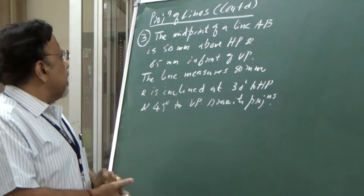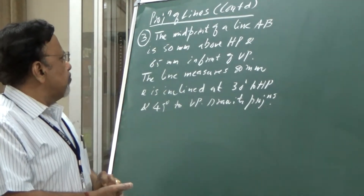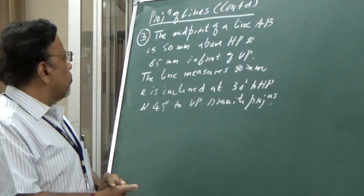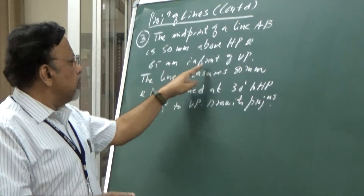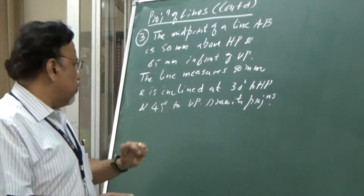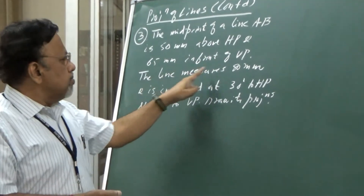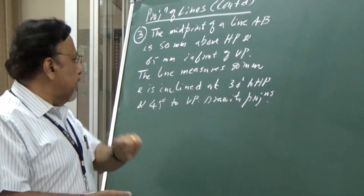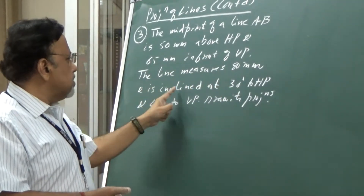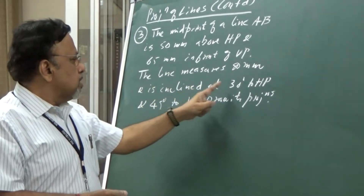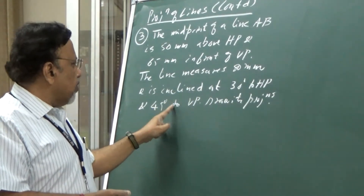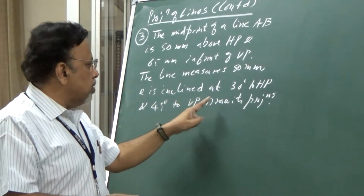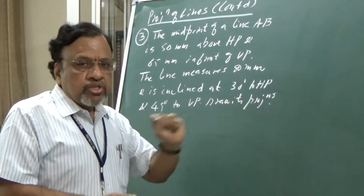The midpoint of a line AB is 50 mm above HP and 65 mm in front of VP. The line measures 80 mm and is inclined at 30 degrees to HP and 40 degrees to VP. Draw its projections.